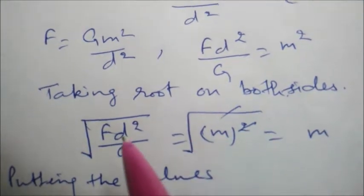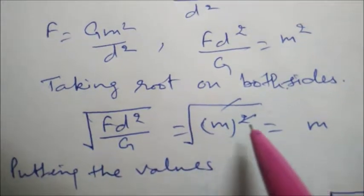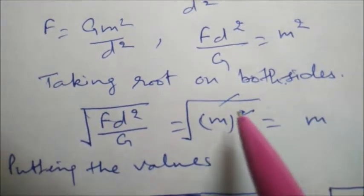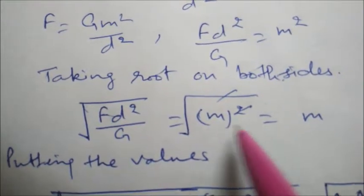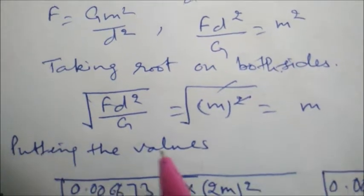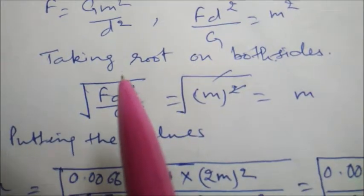Taking root on both sides, the square and root will cancel with each other and it will remain M. Now putting the values that have been given to us,